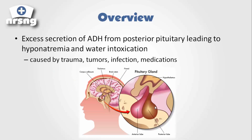What happens is our posterior pituitary, located right up here in our brain, begins to excrete excess amounts of antidiuretic hormone. And what happens with this is what leads to water intoxication and hyponatremia.